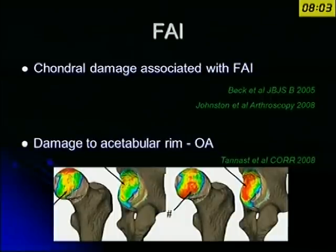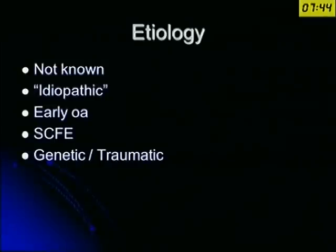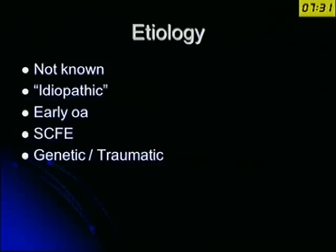There is literature which clearly tells us that there is cartilage damage associated with femoral acetabular impingement and damage to the acetabular rim, especially labral tear, which can lead on to osteoarthritis. The exact etiology is not known — when we don't know much about a particular thing we call it idiopathic. It may be a part of early osteoarthritis findings, or it could be a mild degree of slipped capital femoral epiphysis, or there may be a genetic or traumatic element.